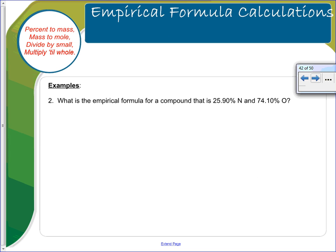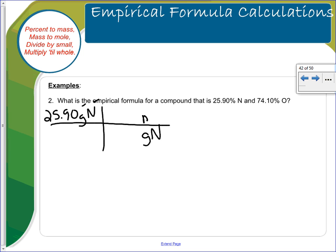What is the empirical formula for a compound that is 25.90% nitrogen and 74.10% oxygen? Assuming a 100-gram sample, 25.90 grams of nitrogen is converted to moles: divide by the molar mass of 14.01. When you do that math, you get 1.8487 moles of nitrogen.